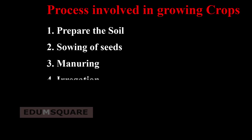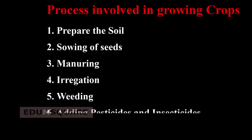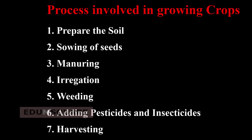Irrigation means watering the plants. The fifth step is the process of removing unwanted plants. The sixth step is adding pesticides and insecticides to keep away pests and insects. The seventh step is harvesting, which means cutting the crops after they are ripe. These are the different steps in the cultivation of crops.